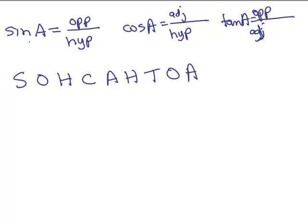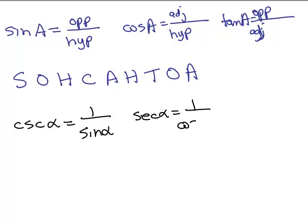Once you know the sine, the cosecant is its reciprocal: hypotenuse over opposite. The secant is the reciprocal of cosine: hypotenuse over adjacent. You also need to learn that the cosecant of an angle equals 1 over the sine of the angle, the secant of an angle equals 1 over the cosine of the angle, and the cotangent of an angle equals 1 over the tangent of the angle.